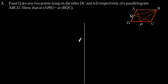Exercise 9.2, Question number 3. P and Q are any two points lying on the side DC and AD respectively of a parallelogram ABCD. Show that area of APB is equal to area of BQC. This is our required figure, which has P and Q, two points lying on the side DC and AD.